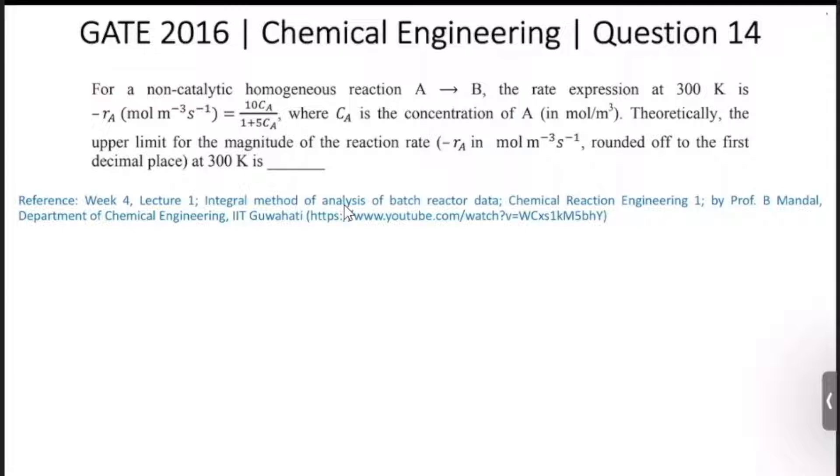This is a question from GATE 2016 Chemical Engineering, question number 14. For a non-catalytic homogeneous reaction A gives B, the rate expression at 300 Kelvin is minus r_A is equal to 10 C_A by 1 plus 5 C_A, where